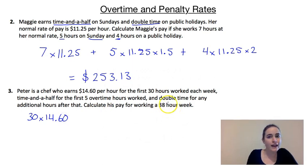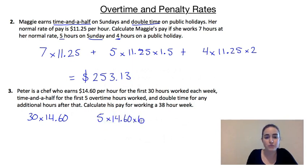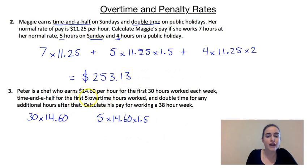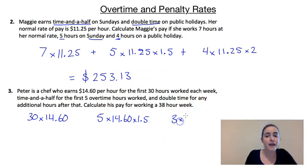He's worked 38 hours, so for the next five hours he's going to get time and a half: 5 × $14.60 × 1.5. For anything above that he gets double time. We've got 30 hours plus five hours, which brings us to 35. But he's worked 38 hours, so that means he's worked another three hours over that, and he's going to get paid double time for those: 3 × $14.60 × 2.